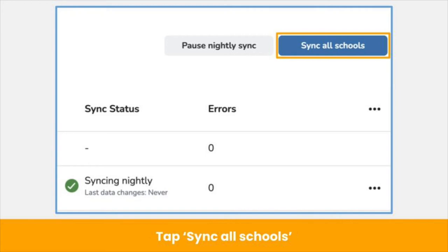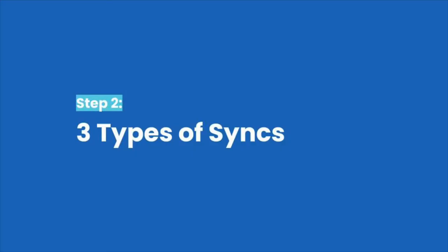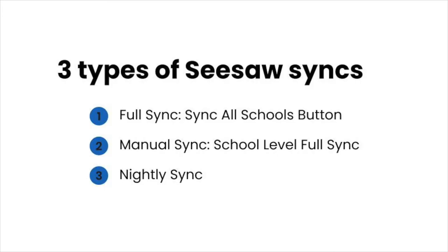There are three types of syncs between Clever or Classlink and Seesaw. First, the full sync, which you just initiated, resets all syncing data in Seesaw to match exactly what is shared in Clever or Classlink for all schools in your district.